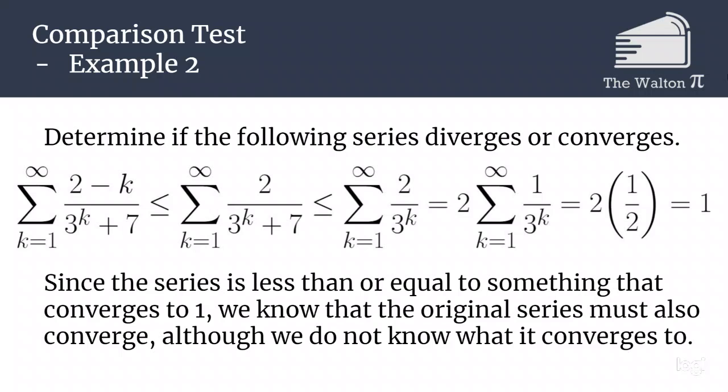So this is going to be less than or equal to 1. That tells us we have a series less than or equal to something that converges to 1. So we know the original series, (2 minus k) over (3 to the k plus 7), must also converge — although all we know is that it converges to something smaller than or equal to 1. We don't know exactly what it converges to.